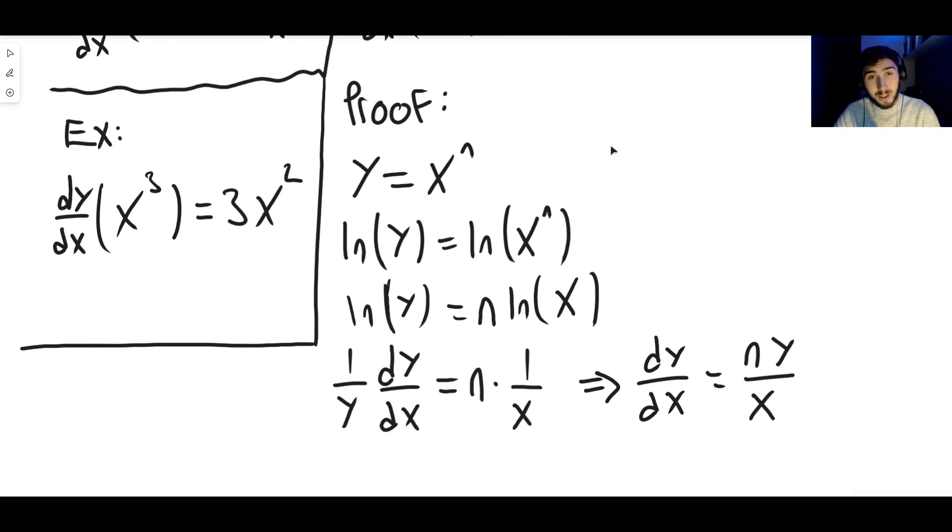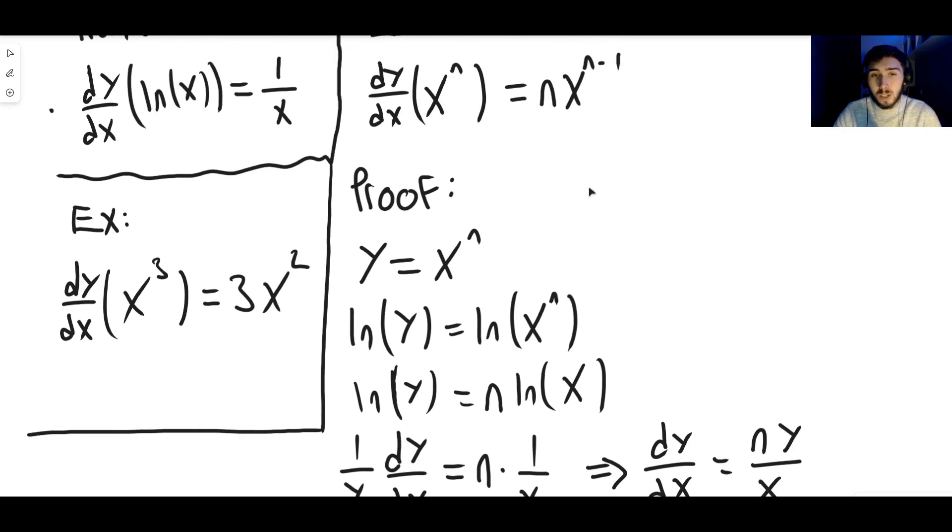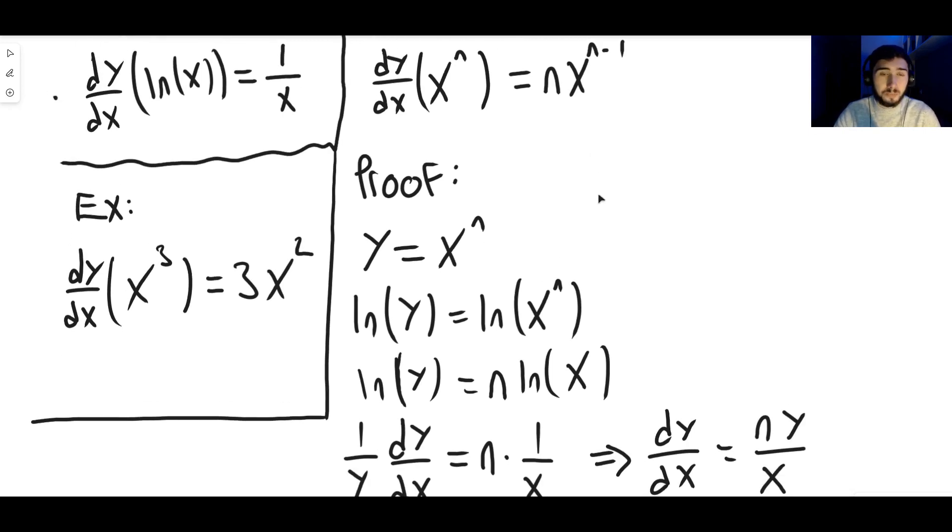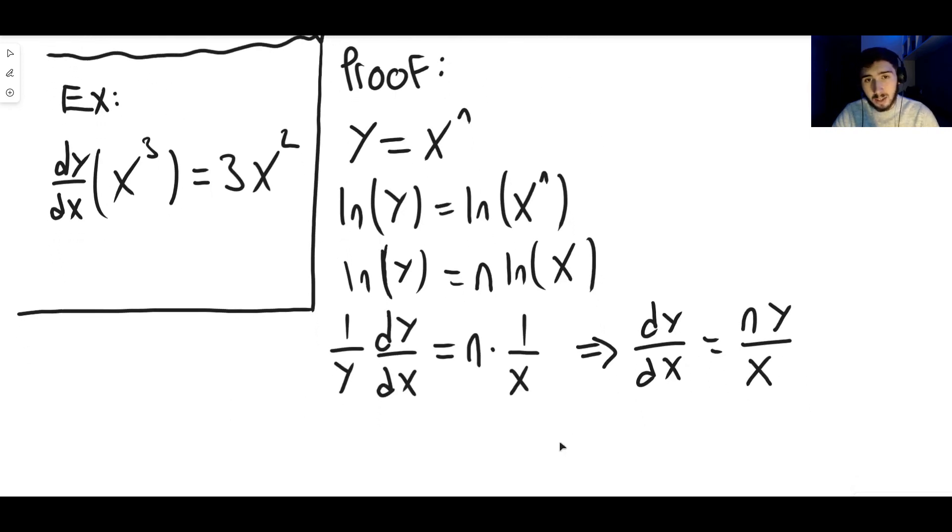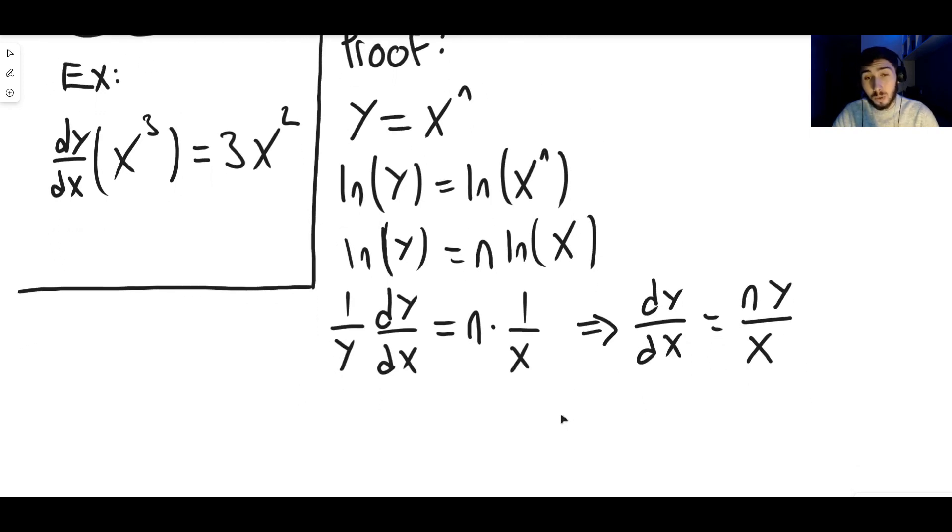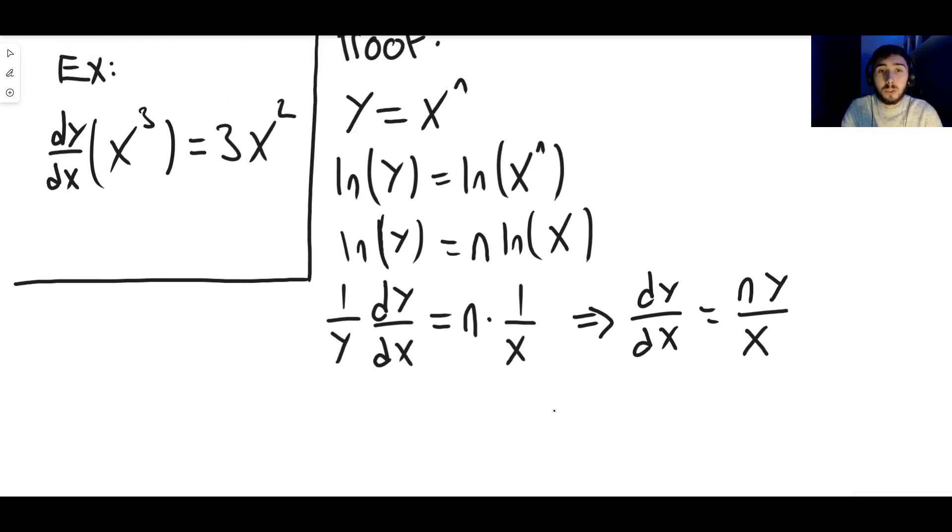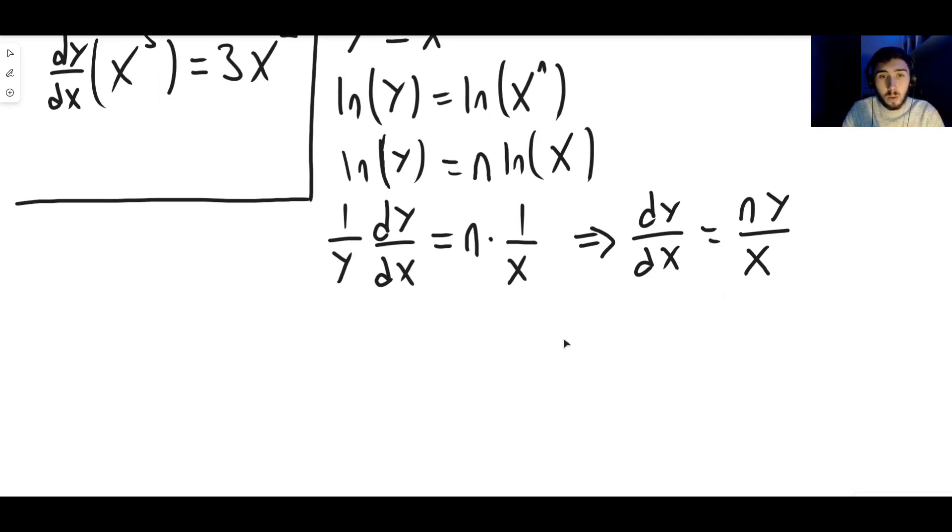But we don't want any y's to be on the right hand side. The reason for this is because it's not very nice. It's not useful. That y, we'd like to replace it with a function of x. But there's something very convenient because what did we say that y was? We said originally that y is x to the n, which means again, we can replace y with x to the n. y equals x to the n. We know it is true, remember?